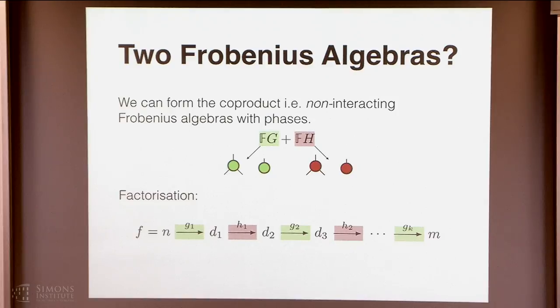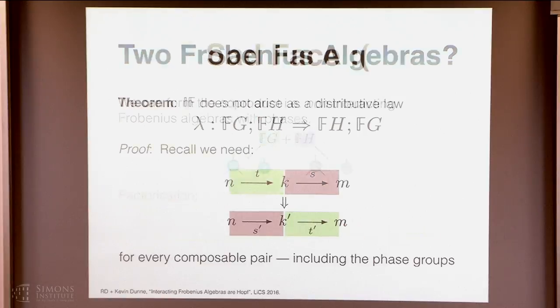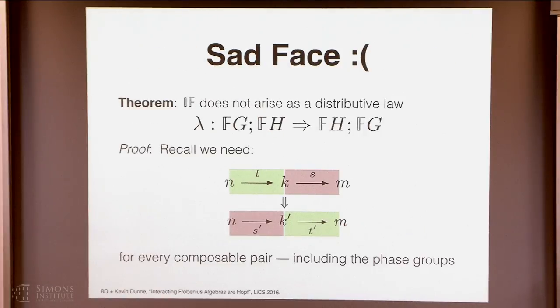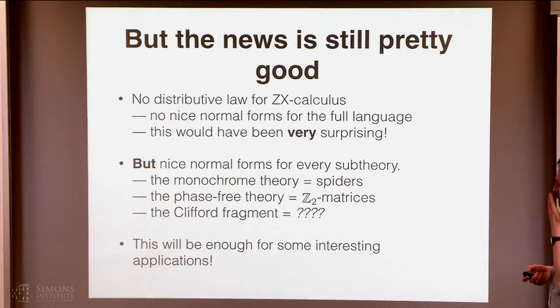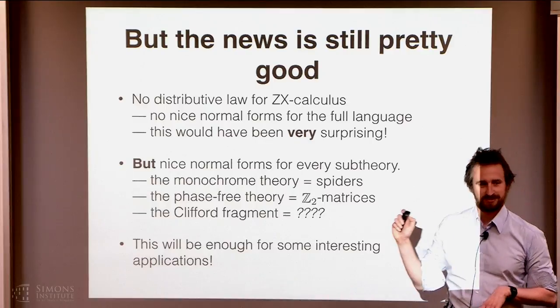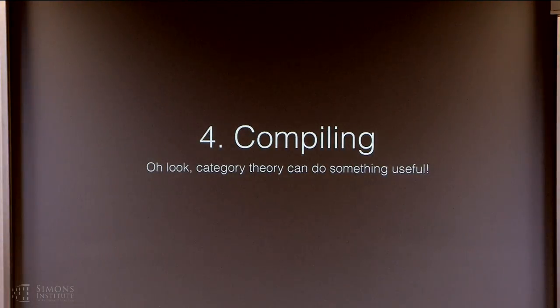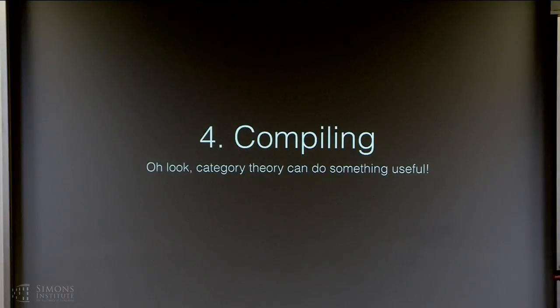And for a little bit more work, you can do the same trick for Hoff algebras. So the bad news is that we can't get all the way to the full ZX calculus as a composite prop in this sense. So we can form the prop of the green spiders and the prop of the red spiders, and we can have this factorization where we also have an alternating sequence of red and green things, but we don't get this distributive law. And the reason basically, say, is because of the phases. So if this was true, then every X rotation would commute with every Z rotation, which is obviously false. So for the full theory, we don't have a chance. But for every interesting sub-theory, we have a distributive law, and hence we have interesting normal forms. And this will be enough for some interesting applications. How much? Two minutes. Okay.